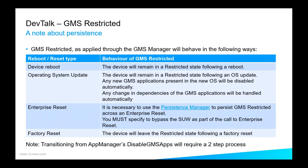This slide highlights how the restricted function works across various types of device reset. A standard device reboot: the device remains in restricted mode. An OS update from O to P or beyond: apps and services remain disabled, and if you had the Maps profile enabled before the update, it remains enabled after — we handle any dependency changes automatically. Restricted mode persists across an OS update.